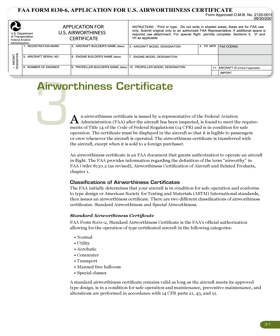Standard Airworthiness Certificate, FAA Form 8100-2, is the FAA's official authorization allowing for the operation of type-certificated aircraft in the following categories: Normal, Utility, Acrobatic, Commuter, Transport, Manned-Free Balloons, and Special Classes. A Standard Airworthiness Certificate remains valid as long as the aircraft meets its approved type design, is in a condition for safe operation, and maintenance, preventive maintenance, and alterations are performed in accordance with 14 CFR Parts 21, 43, and 91.